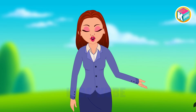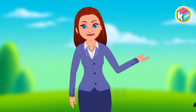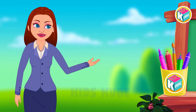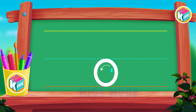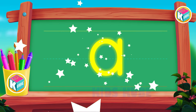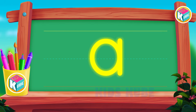Now we will learn the first small letter A. First, draw a circle back in the second line to the third line. And after, draw a straight line from the second line to the third line. Wow, this is the first small letter A.